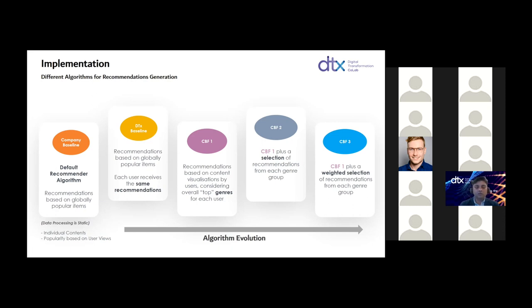In the first recommendation generation method, we prepare 10 recommendations considering overall top genres for each user — if a user likes 10 different genres, we give recommendations based on those genres and each recommendation corresponds to one particular genre. In the second type, we do a selection from each genre group, so a user gets recommendations and each genre has the same weight. In the third methodology, we give weightage based on preferences — if a user likes comedy more than drama, we give more recommendations of comedy than drama, so each genre may have a different number of recommendations.